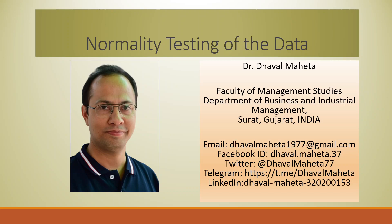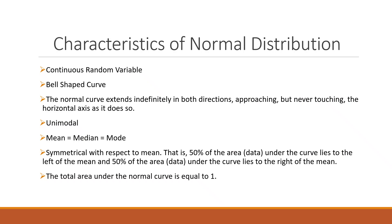Hello to all of you, this is Dr. Tawal Mehta. Today we will understand how to do normality testing of data. If any variable is normally distributed, it will depict some characteristics. It is a continuous random variable with a bell-shaped curve. The normal curve extends indefinitely in both directions, approaching but never touching the horizontal axis — also known as an asymptote.